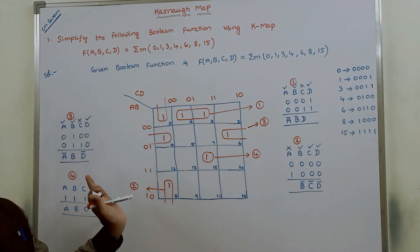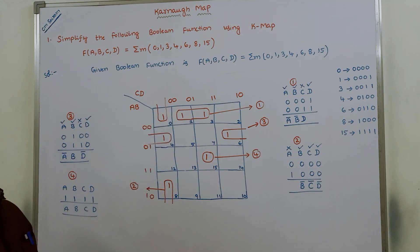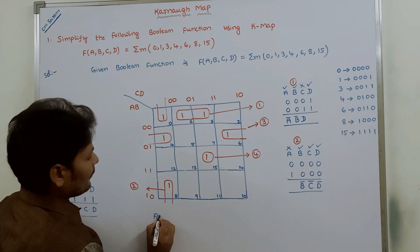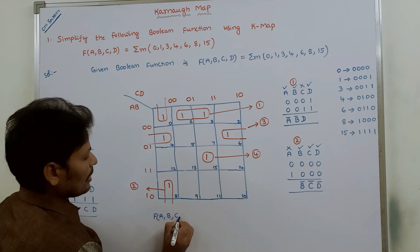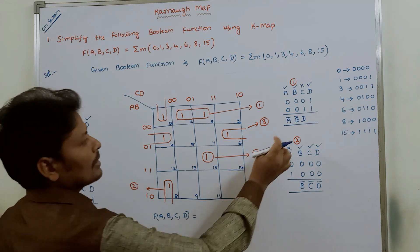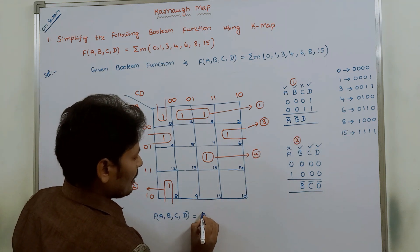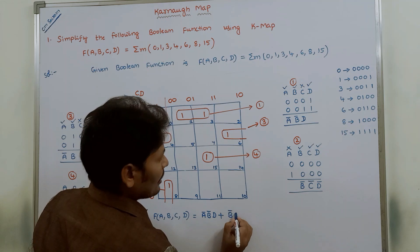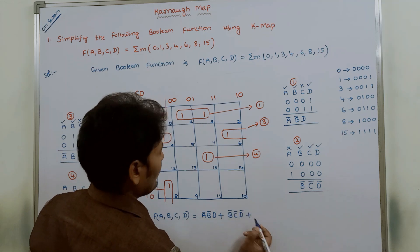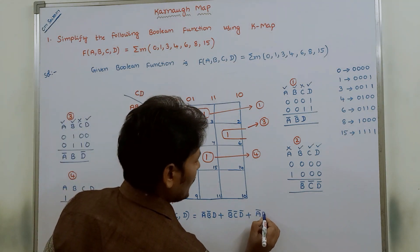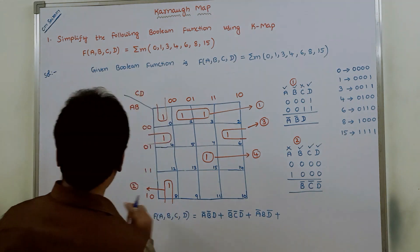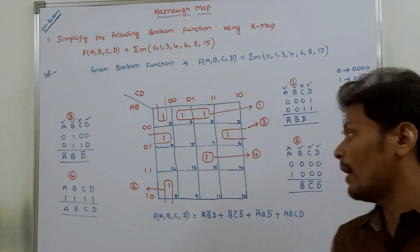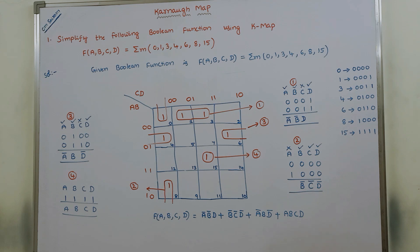After grouping all the 1s in the Karnaugh map, the simplified Boolean expression is: F(A, B, C, D) = Ā·B̄·D + B̄·C̄·D̄ + Ā·B·D̄ + A·B·C·D. This is the simplified expression obtained by using the Karnaugh map.